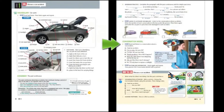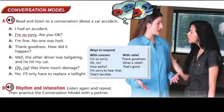Page 41. Conversation model, Exercise A. Read and listen to a conversation about a car accident. I had an accident. I'm so sorry. Are you okay? I'm fine. No one was hurt. Thank goodness. How did it happen? Well, the other driver was tailgating and he hit my car. Oh no. Was there much damage? No, I'll only have to replace a taillight.